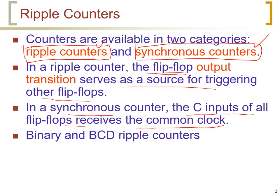There are two types of Ripple counters that we will describe. The first is called the Binary Ripple counter, which we describe in this video. The other one is called BCD, or Binary Coded Decimal Ripple Counter, which we present in the next video.